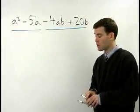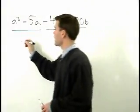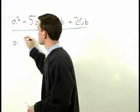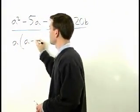For the first two terms, we can factor out an a. That leaves us with a minus 5.